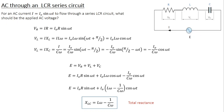As in the previous class, we are trying to answer the question: for a given AC current I equal to I₀ sin(ωt) to flow through the circuit, what should be the applied AC voltage? As you can see in the diagram, there are three voltage components: one associated with the ohmic resistance Vr, one with the inductor Vl, and one with the capacitance Vc. Let's first find out the values of these three voltage components.